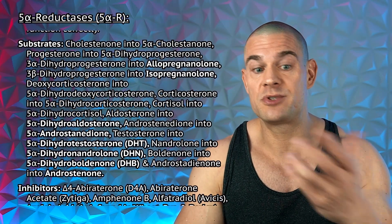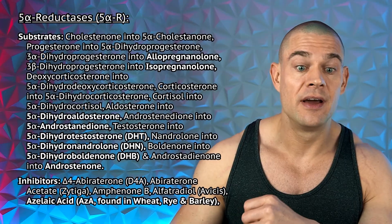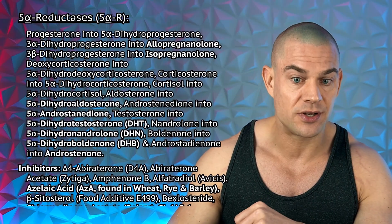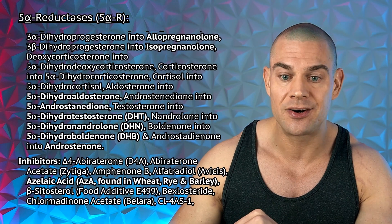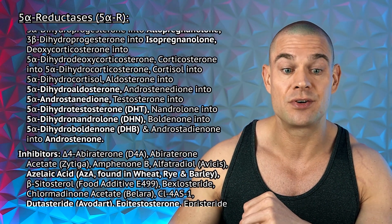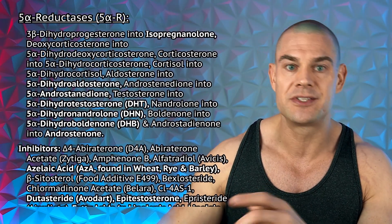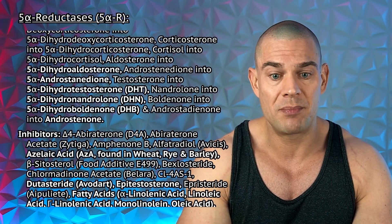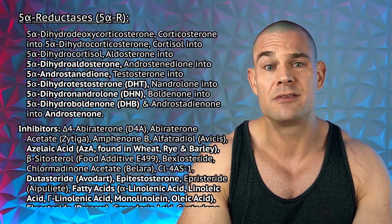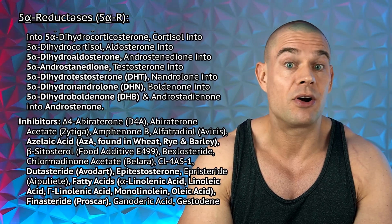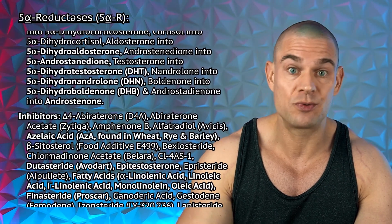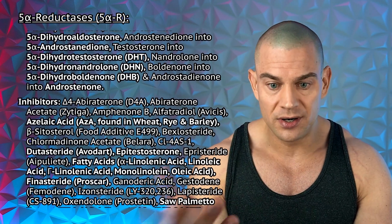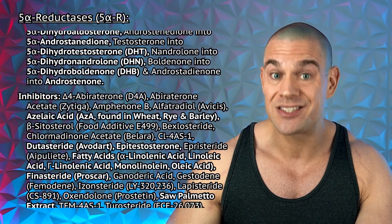Most notably, the 5-alpha reductase enzymes help in the production of allopregnanolone and isopregnanolone, as well as the conversion of androstenedione into 5-alpha-androstenedione, testosterone into 5-alpha-DHT, nandrolone into 5-alpha-DHN, and boldenone into 5-alpha-dihydroboldenone (DHB), which is found on the black market as dihydroboldenone acetate or cypionate. Boldenone and DHB may have some kidney toxic effects but are also active as aromatase enzyme inhibitors.